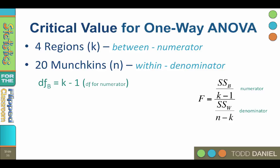The degrees of freedom between equals k minus 1. So in our example where we have 20 munchkins from four regions, k equals 4. The degrees of freedom between would be our four regions minus 1 or 3.